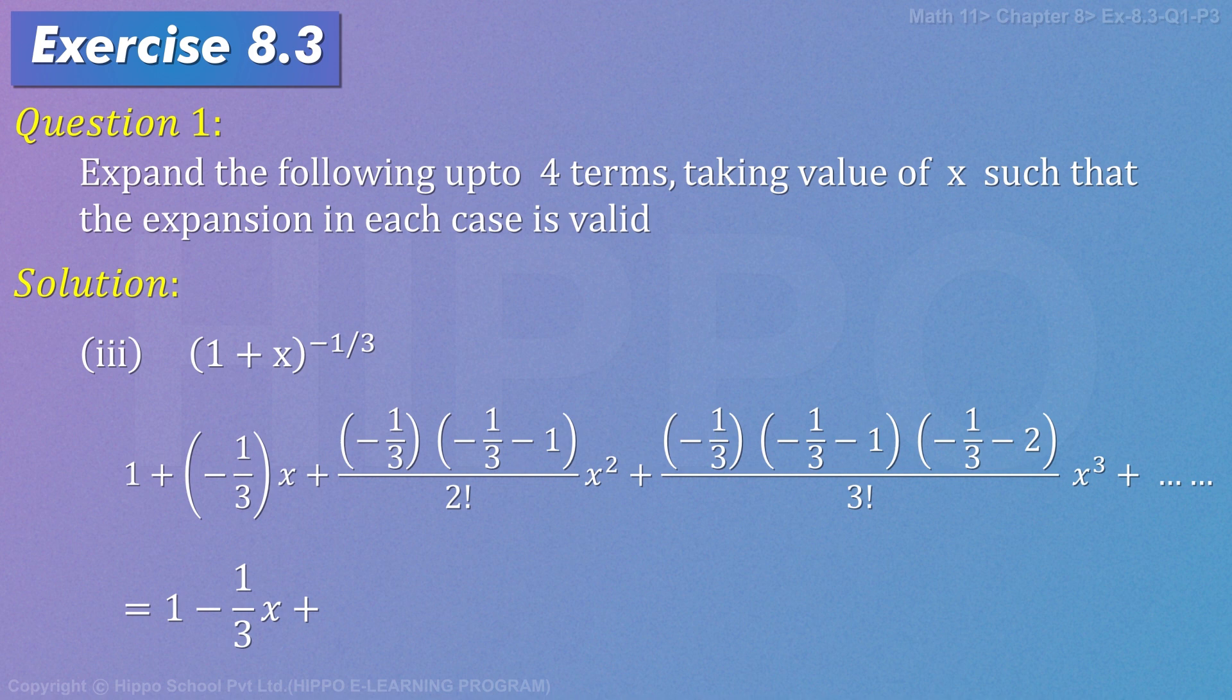isse taan minus 1 by 3 minus 1 ka lcm n n kalehenge phir minus 1 by 3 minus 2 ka lcm n n kalehenge and minus one by three, these three will multiply and divide by three factorial.